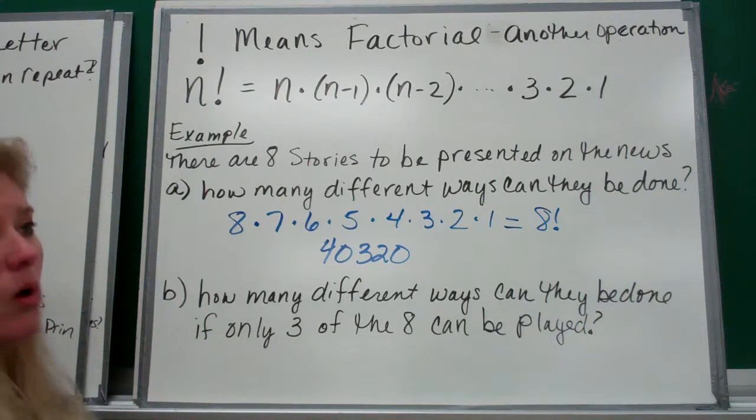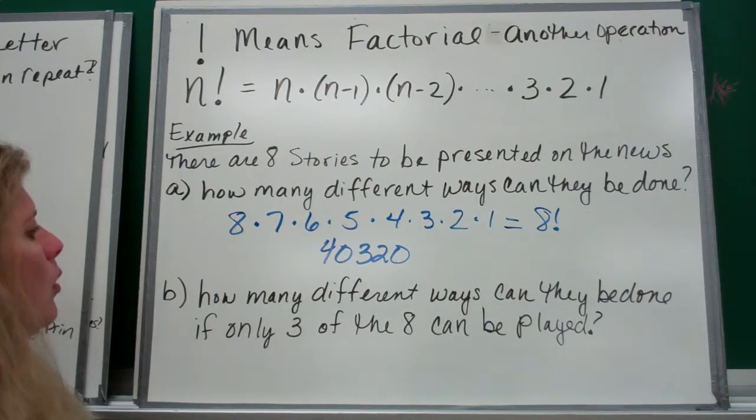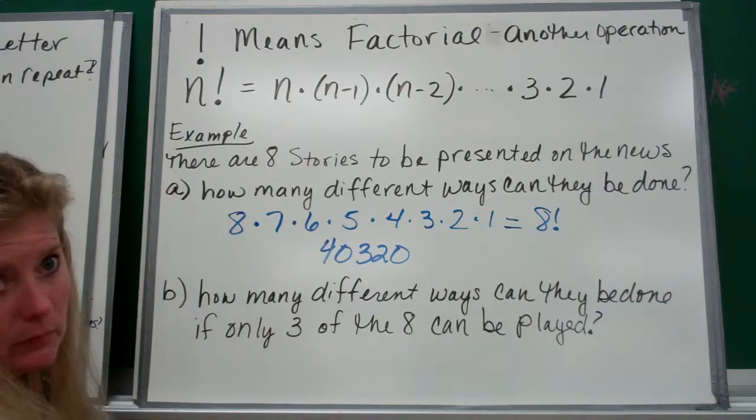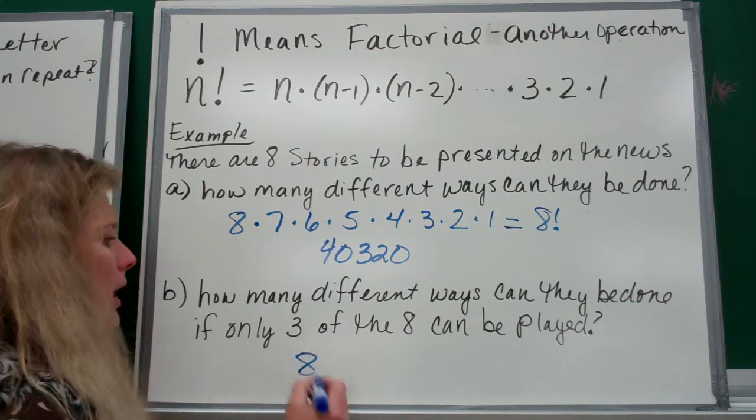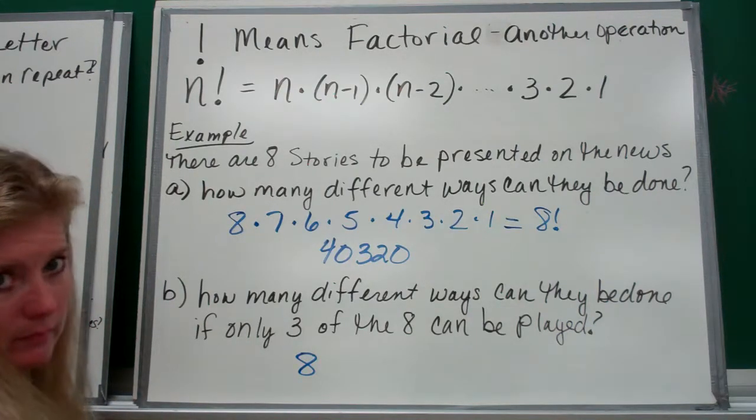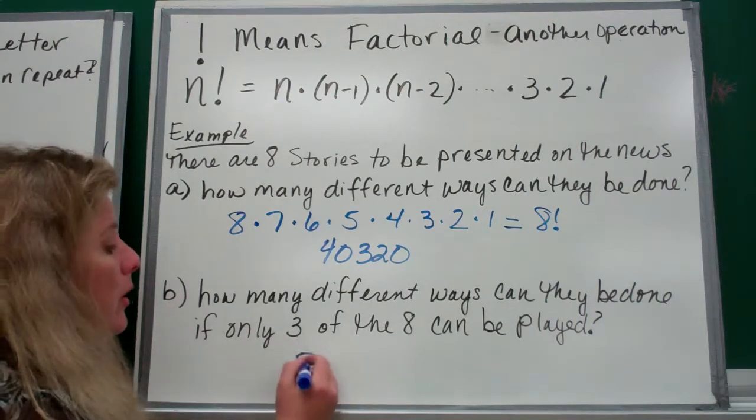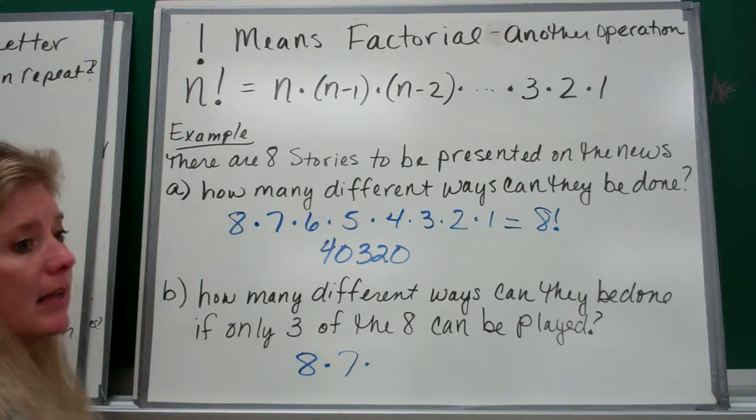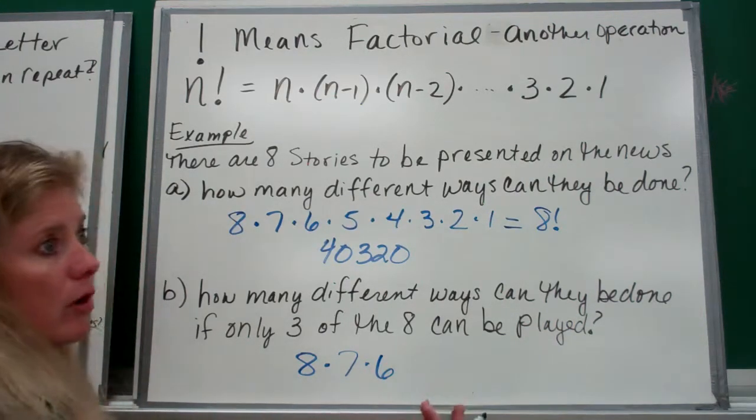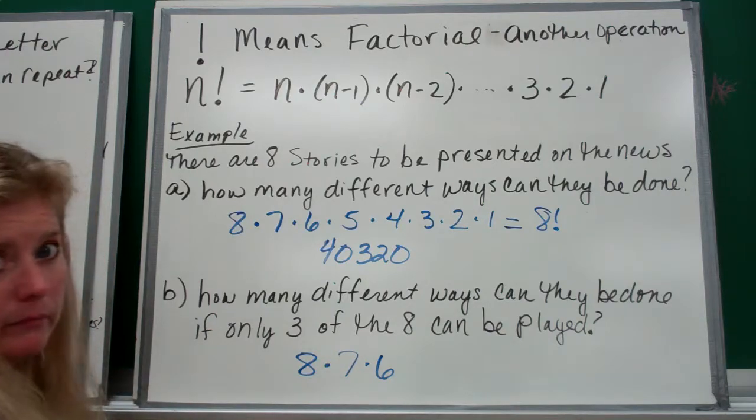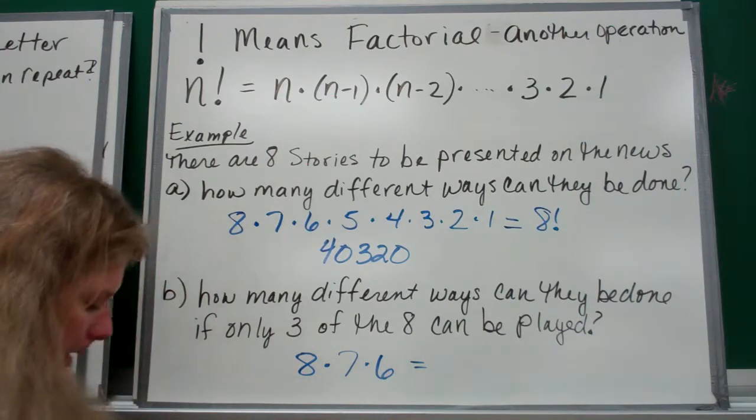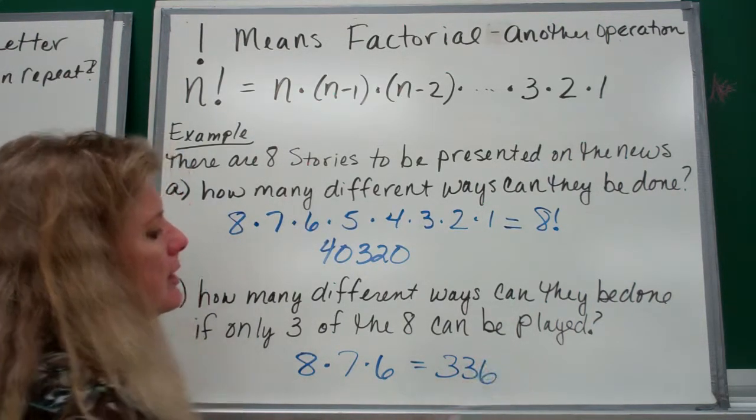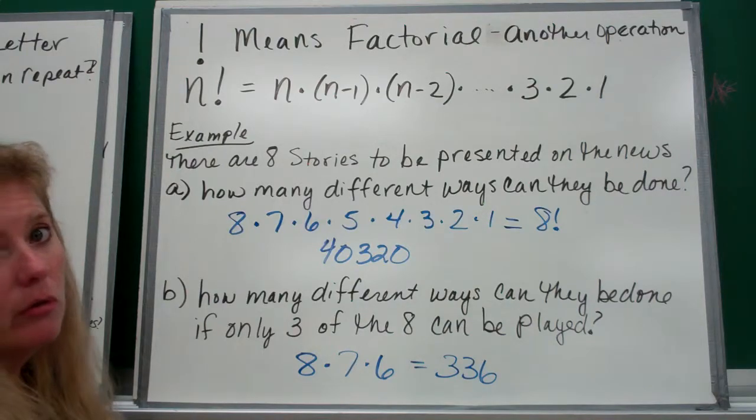What if they could only show three of those eight shows? That just means I've got 8 to choose from at first, then I've got 7 to choose from for the second slot, and I've got 6 to choose from for the third slot. Multiply those: 8 times 7 times 6. That means there's 336 different ways to show those episodes.